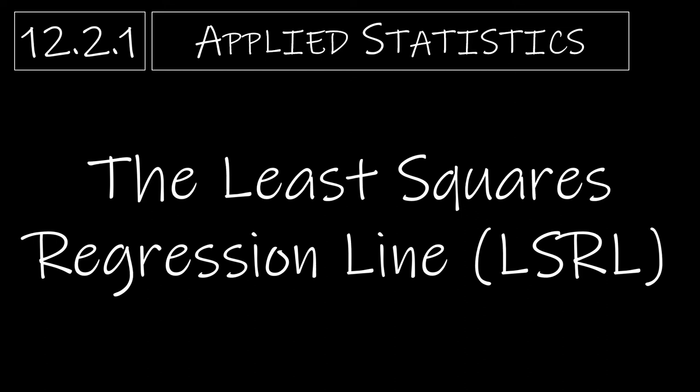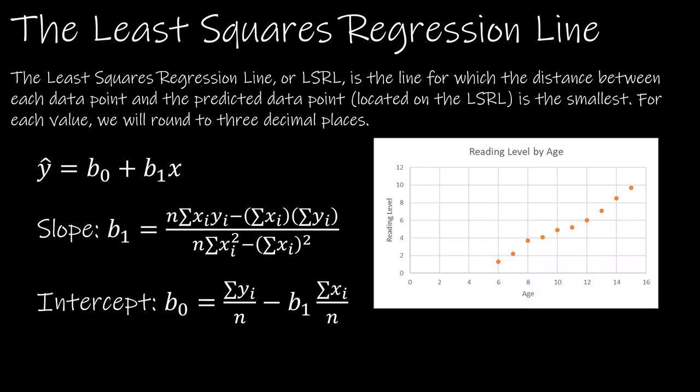In this video we're going to take a look at the least squares regression line or the line of best fit. Essentially, the least squares regression line or LSRL is the line for which the distance between each data point and a predicted data point is the smallest. Before we look at any of those equations which look a little bit intimidating...